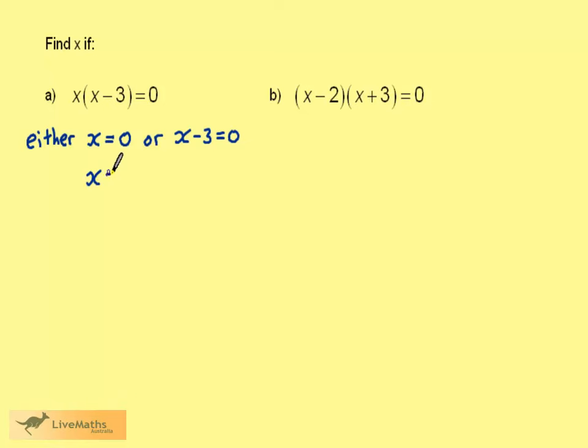So we have x is equal to 0, or adding 3 to both sides of this equation, we get that x is equal to 3.